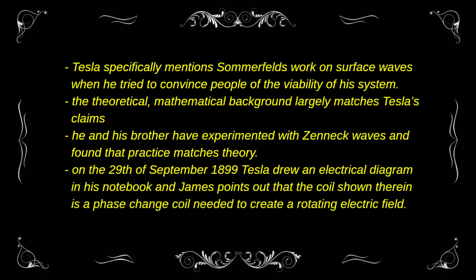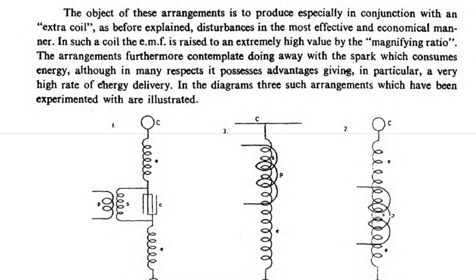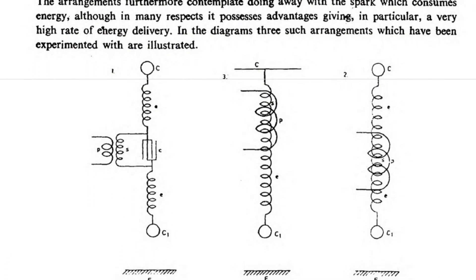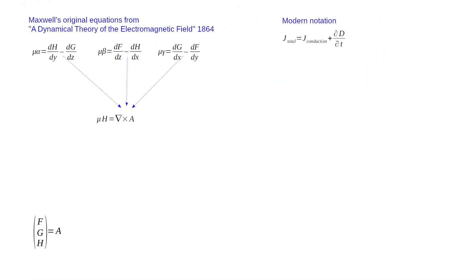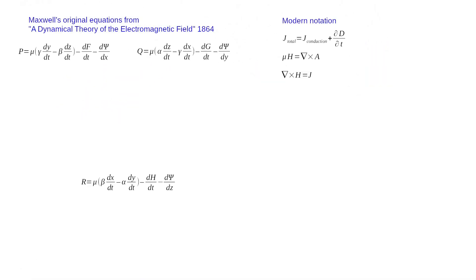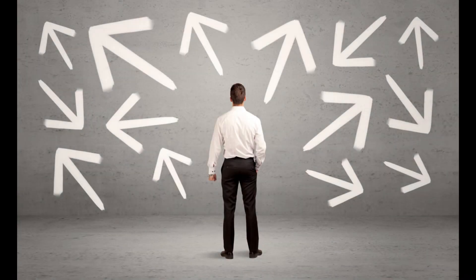On the 29th of September, 1899, Tesla drew an electrical diagram in his notebook, and James points out that the coil shown therein is a phase-change coil needed to create a rotating electric field. All modern electrical theories are based on Maxwell's work. The fact that the Corum brothers can underpin Tesla's claims using Maxwell's equations will convince many scientists who have rejected Tesla's work to reconsider their position.